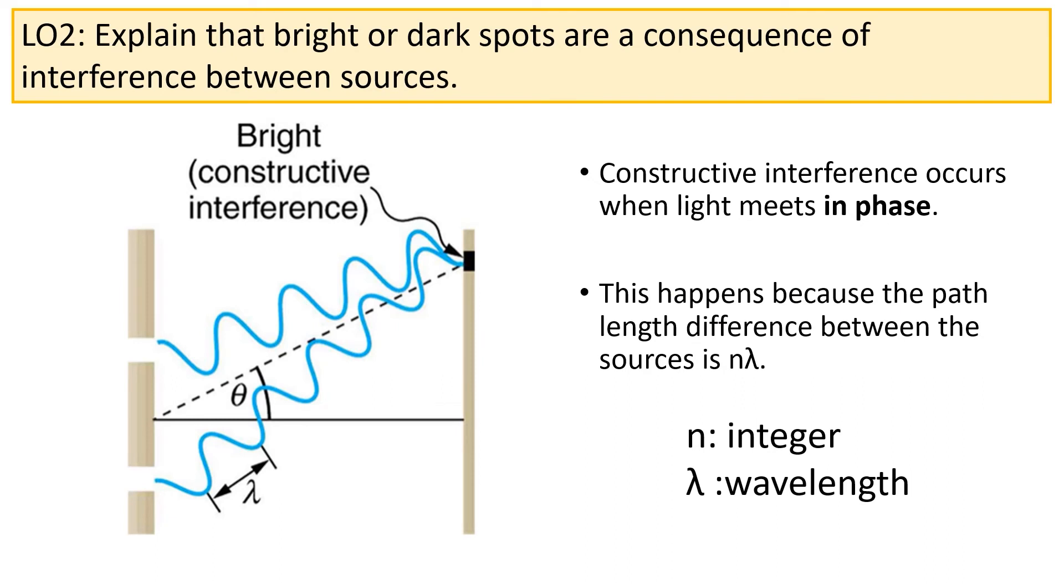Constructive interference occurs at these points because the light is meeting in phase. The reason the light meets in phase at these points is because the path length difference between the sources of light is equal to nλ. That is, the light travels further when it exits one of the slits compared to the other. If this difference in the path length travelled by the light between the slits is equal to some integer number multiplied by the wavelength of the light, the light would meet in phase.